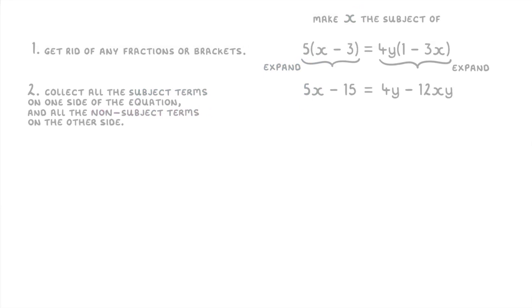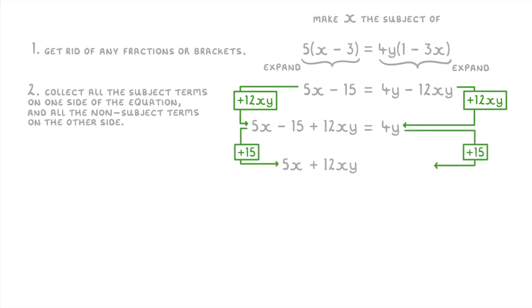To move the 12xy we're going to have to add 12xy to both sides, leaving us with just 4y on the right and giving us 5x minus 15 plus 12xy on the left. And then to move over the 15 we just add 15 to both sides, giving us 5x plus 12xy equals 4y plus 15.